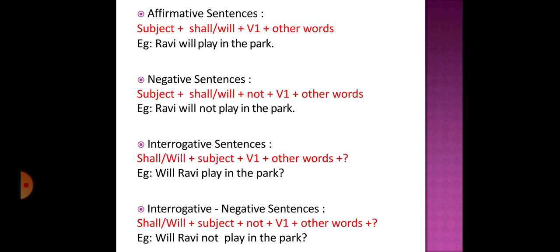Now we move on to the interrogative sentence. In the interrogative sentence, 'shall' or 'will' comes before the subject, followed by the first form of the verb after the subject. For example: 'Will Ravi play in the park?' — 'will' comes before the subject 'Ravi', and 'play' is the first form of the verb. Another example with 'shall': 'Shall I attend the meeting on Monday?' — this also becomes an interrogative sentence.